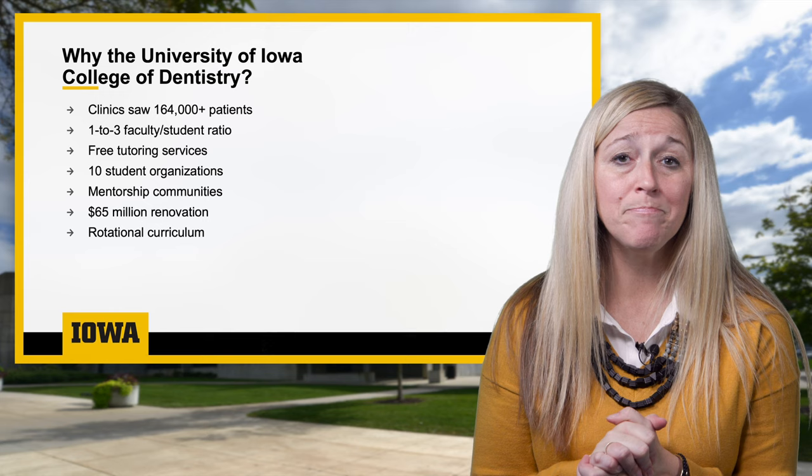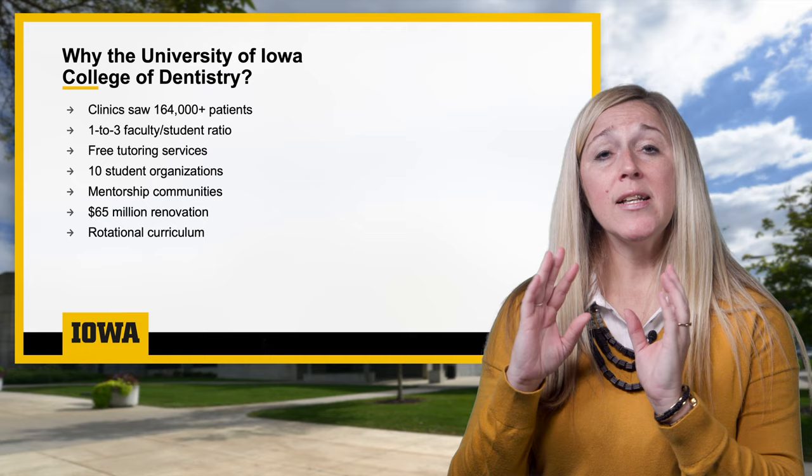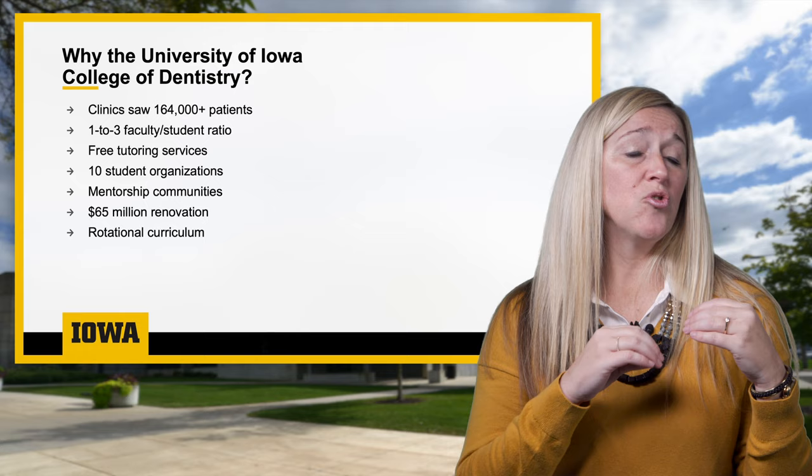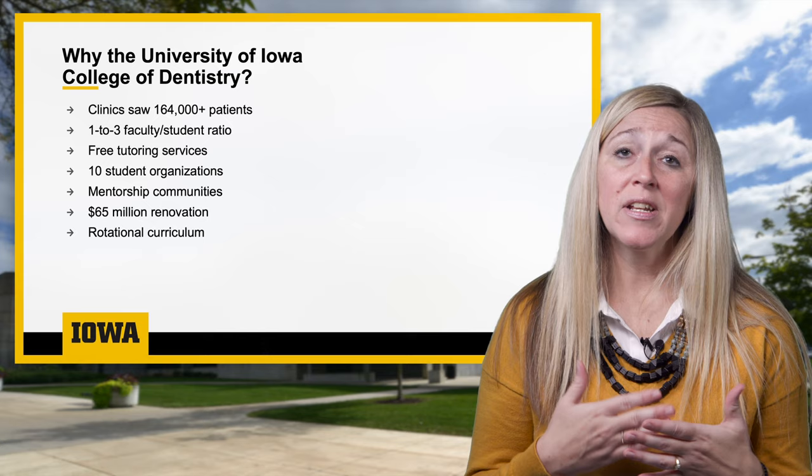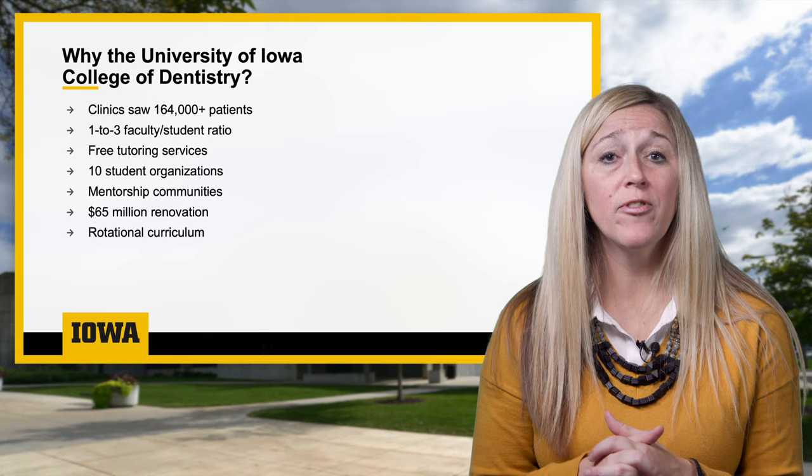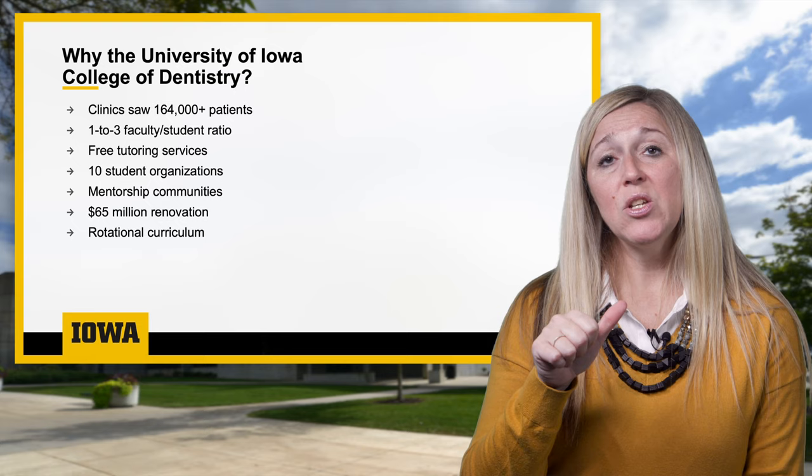We have over 10 student organizations ranging the gamut from specialty areas of interest to faith-based organizations to service organizations. The norm at Iowa is that our students are engaged and involved — it's another way to get to know our collegiate community as well as serve. We also have mentorship communities, where we partner a D1, D2, D3, D4, and a faculty member together.